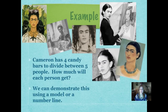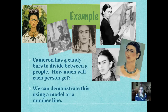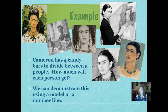Here is our first example, which you did in class a little bit as an activity. Cameron has four candy bars to divide between five people. How much will each person get? What makes this problem challenging is that if you have four whole candy bars, you can't just give one to each person — one person wouldn't get any. So we're going to figure this out by using a model and a number line.